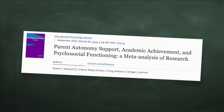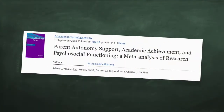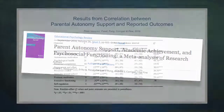A recent meta-analysis by Vasquez and others summarized 36 different studies showing that across school years, when parents are more autonomy supportive, children are more autonomously motivated to do their schoolwork, more committed to school, perform better academically, and most importantly show better mental health and well-being.